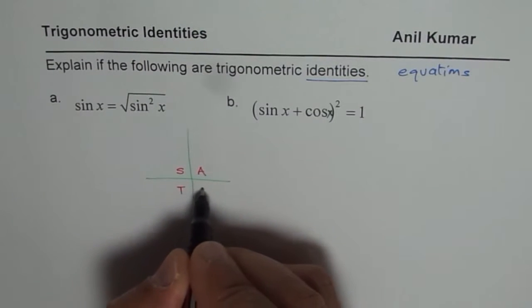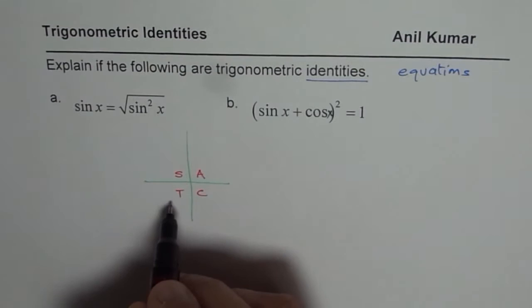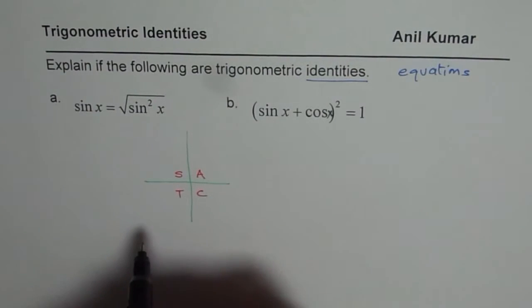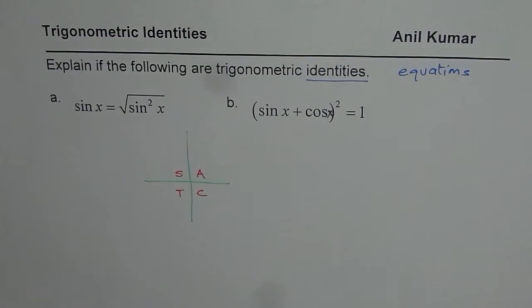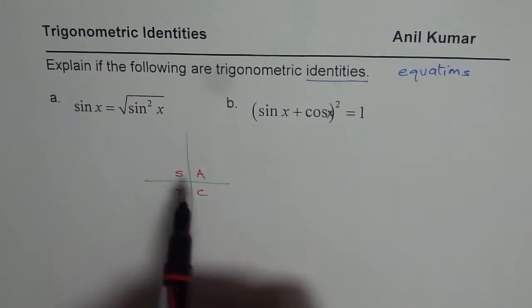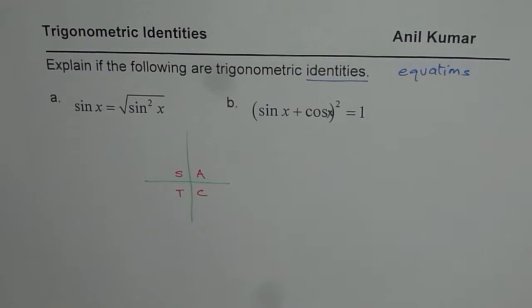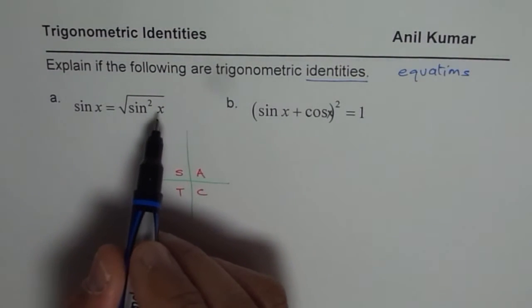Sin is negative for any value of x which is between 180 degrees to 360 degrees. However, if we have the same value here within the square root, I will get a positive value. That means left side will not be equal to the right side. By giving some examples, we can show that this is not an identity. We call them counter examples.